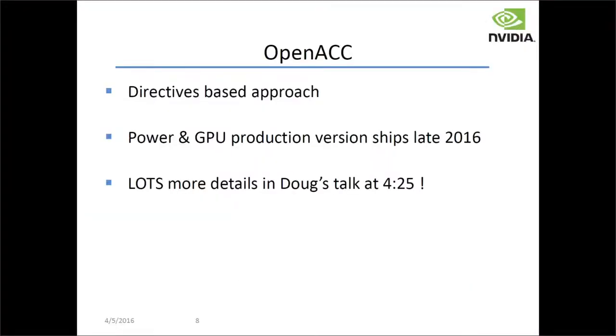OpenACC is always an option, and Doug Miles will be talking a little later about the plans for OpenACC coming to Power, so I won't steal his thunder. It's going to be an interesting option, primarily for scientific codes but for some others as well, and it can take advantage of NVLink and all of these features in a very transparent way to the programmer.